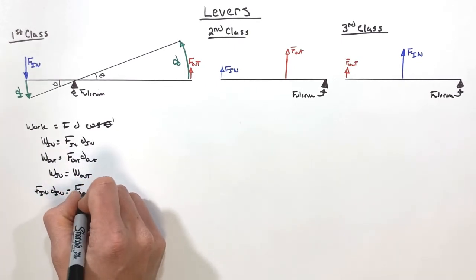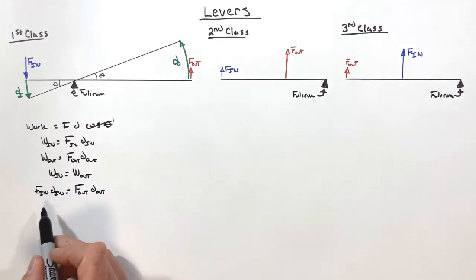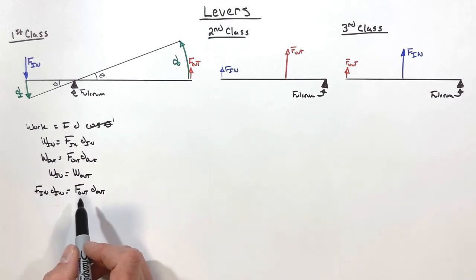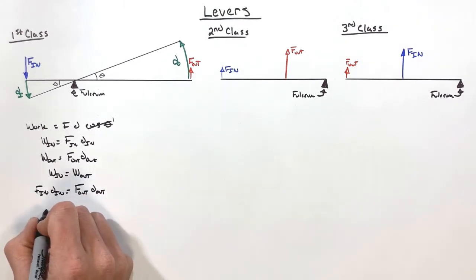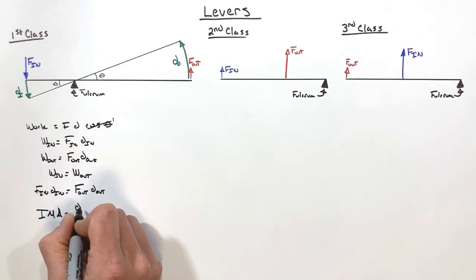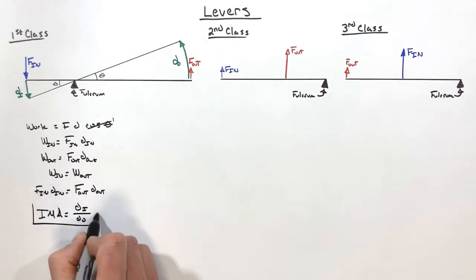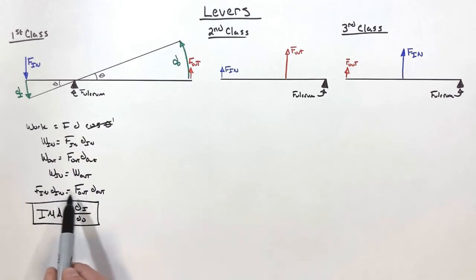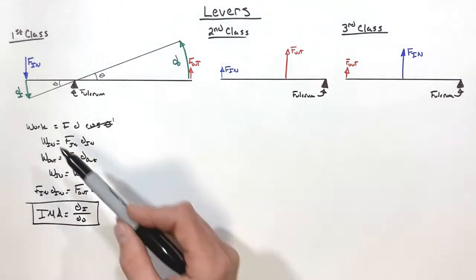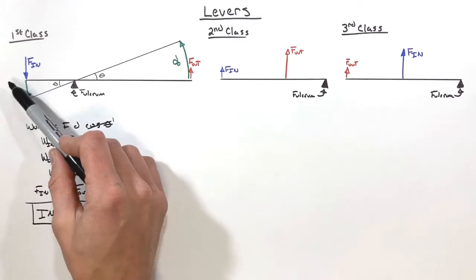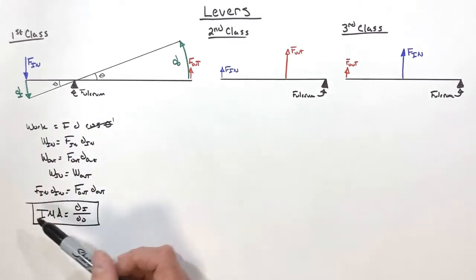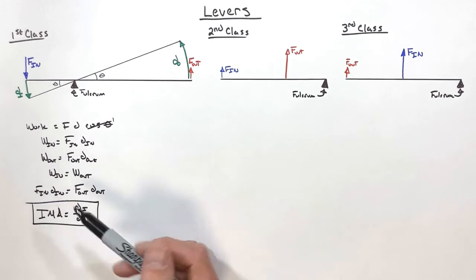...equals force out times displacement out. Now nothing immediately pops out at us here as being any sort of huge or important revelation that we can have. But I want you to remember that IMA, the ideal mechanical advantage, is d_in over d_out. That's how we mathematically define this. So if we could somehow connect or draw a correlation between these displacements and the lever itself, then we could of course figure out the IMA of a lever.